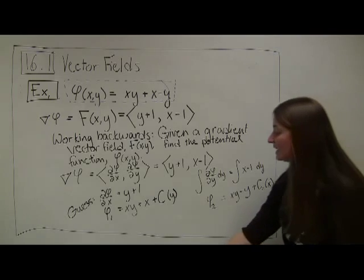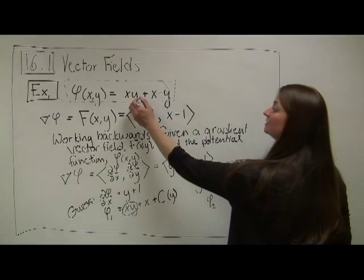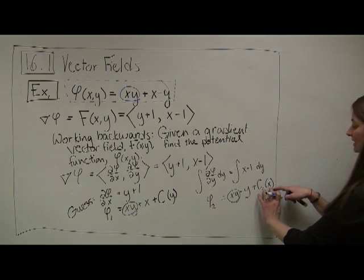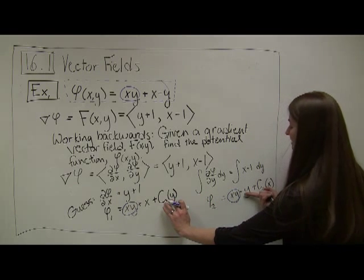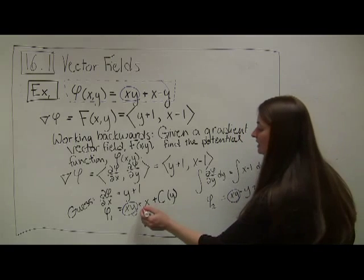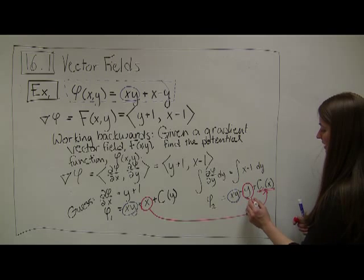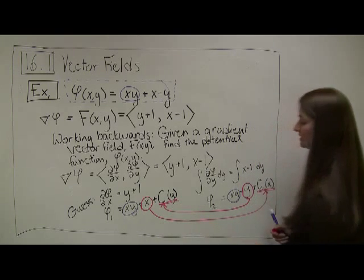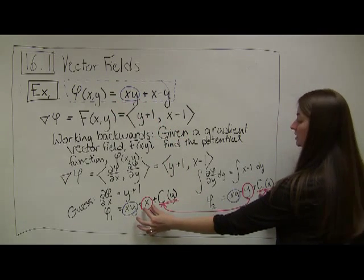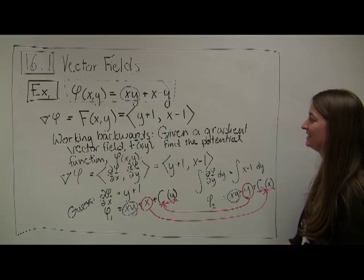Any term that has both x's and y's will match between the two functions — the xy term matches in both, coming from the original xy term. Any term that is only a function of x corresponds to the function-of-x constant, and any term that is only a function of y corresponds to the function-of-y constant. Drawing lines connecting them: the x term here comes from this piece, and the negative y term comes from that piece. So putting these together, the terms that match are from the original function, and the independent terms complete it. Let's see one more example now that we've formalized a system for this.